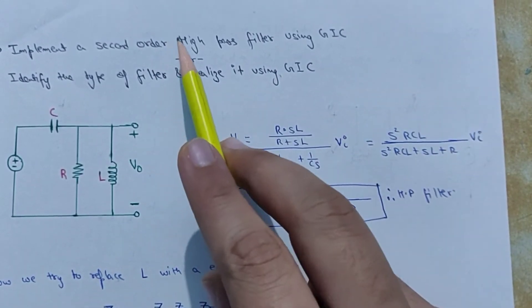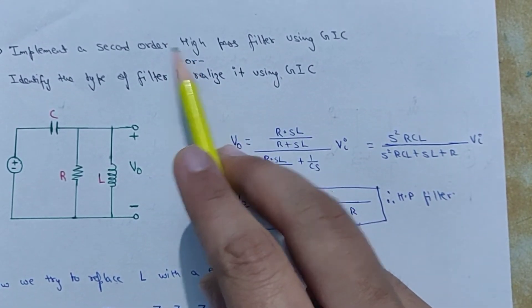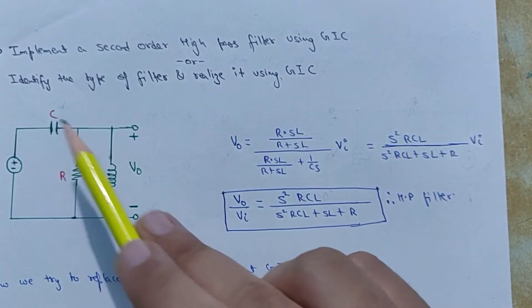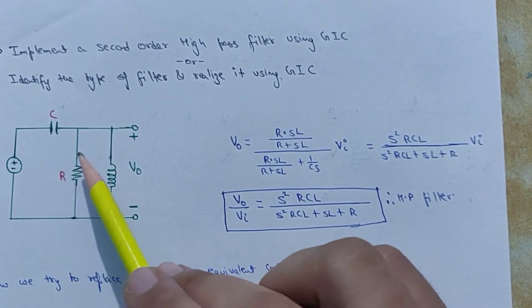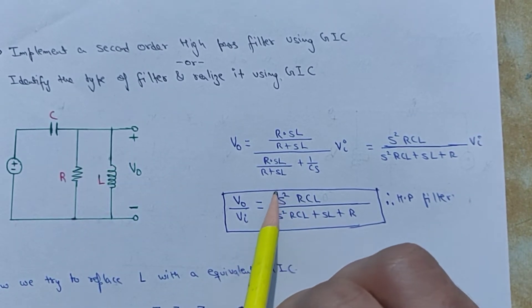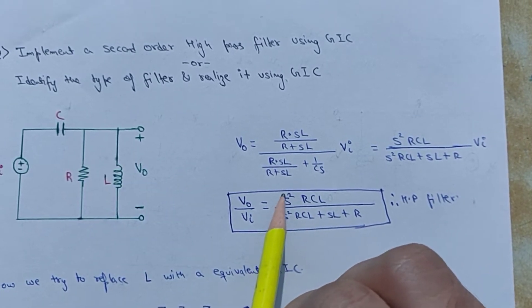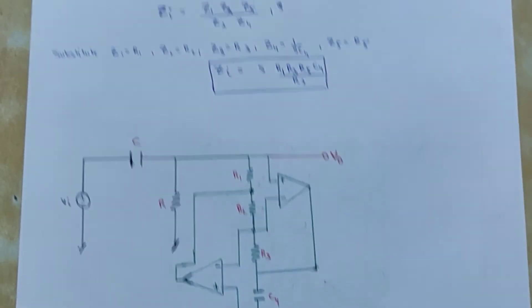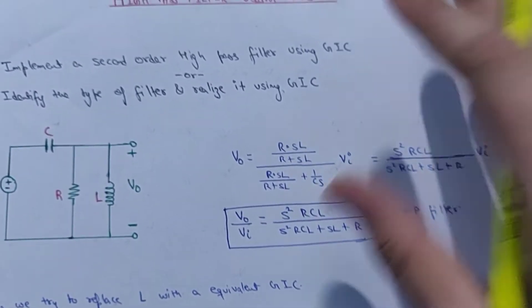And if the question is asked in the first configuration, you have to first draw the circuit, then prove that it is a high pass filter, and then implement it using a generalized impedance converter.